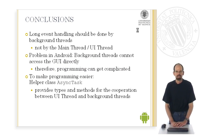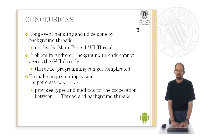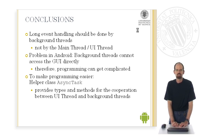What have we learned in this lesson? We have remembered that long event handling should be done by background threads, not by the main thread itself. The problem in Android is that background threads cannot access the graphical user interface directly, so programming might get complicated. However, there is a helper class AsyncTask which makes programming easier, because it provides types and methods for the cooperation between the UI thread and background threads. Thank you for your attention.